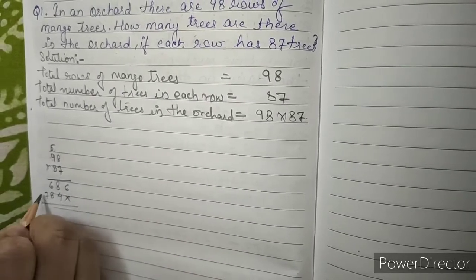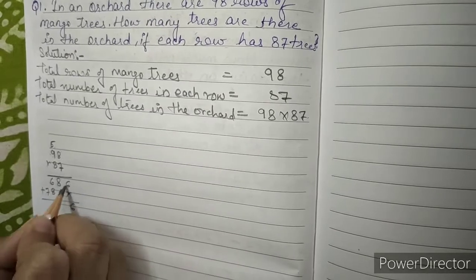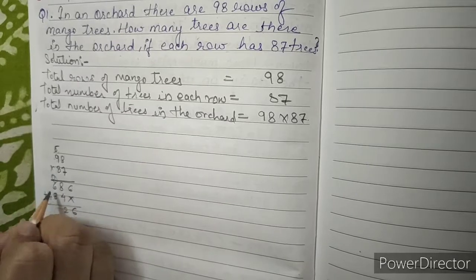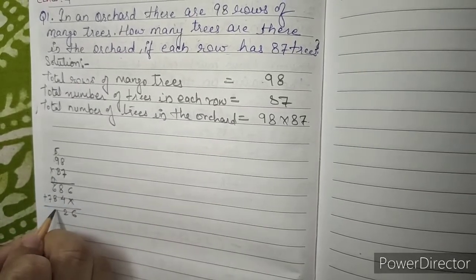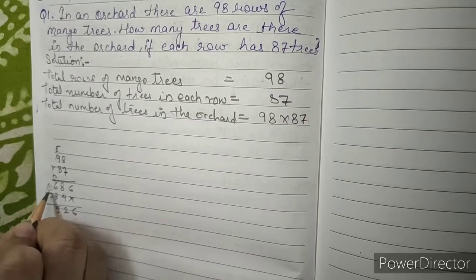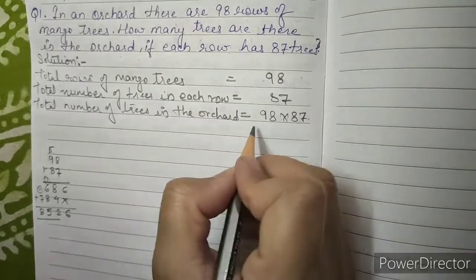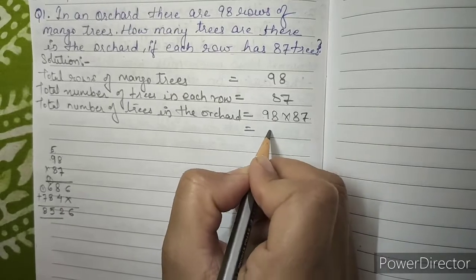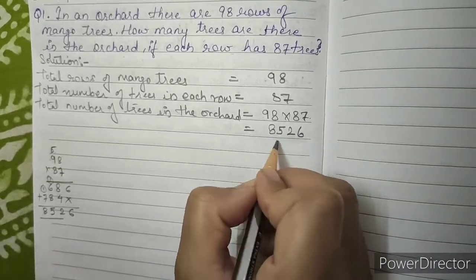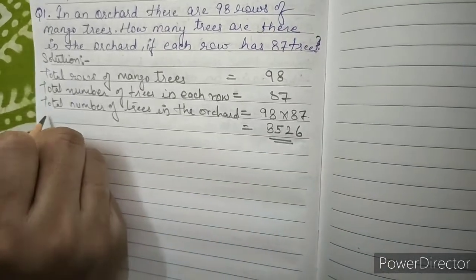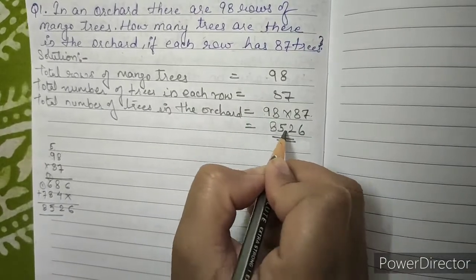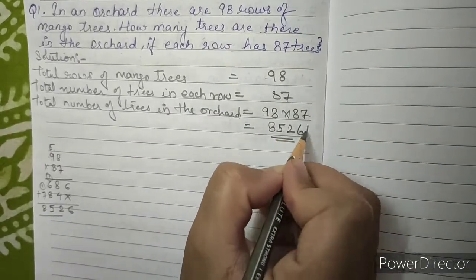Now we'll add. We'll write 6 as it is. 8 plus 4 is 12, we'll write 2 carry 1. 7 plus 8 is 15, we'll write 5 carry 1. 7 plus 1 is 8. So after multiplying 98 and 87 we got our answer as 8,526. Total number of trees in the orchard are 8,526 trees.